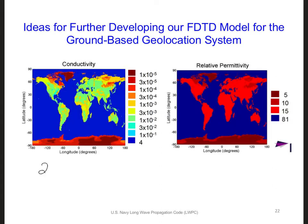Second, the ground cannot always be considered a good conductor, as we saw in these plots. So we should develop an SIBC formulation that doesn't rely on the assumption that the ground is a good conductor.